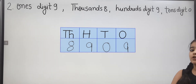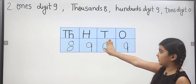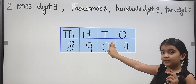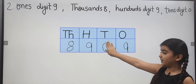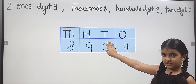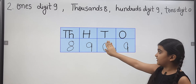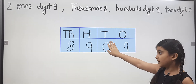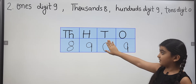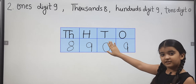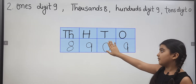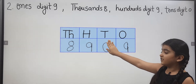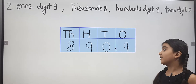Tens is zero. So here we write zero. If we have a four-digit number and tens is zero, we still write it — tens of zero is zero. We will write four digits.